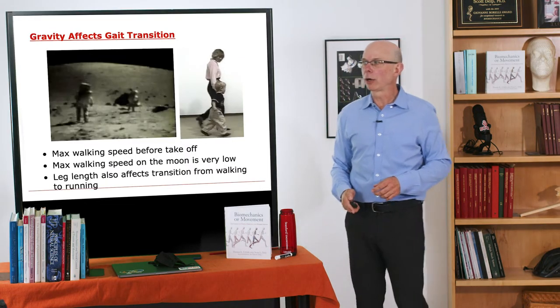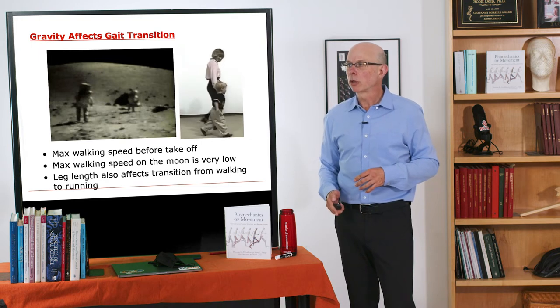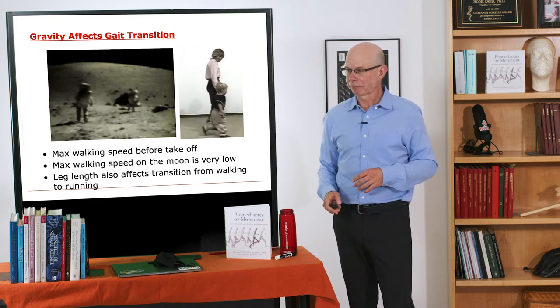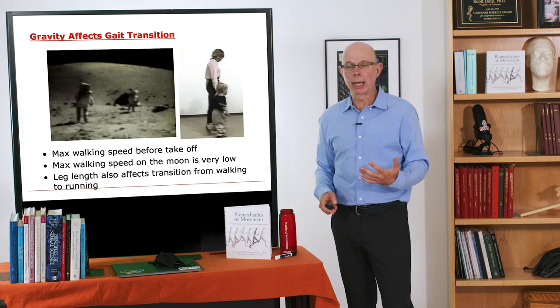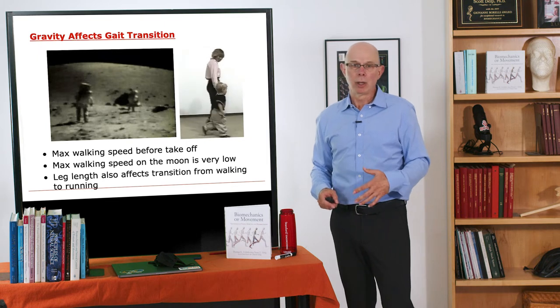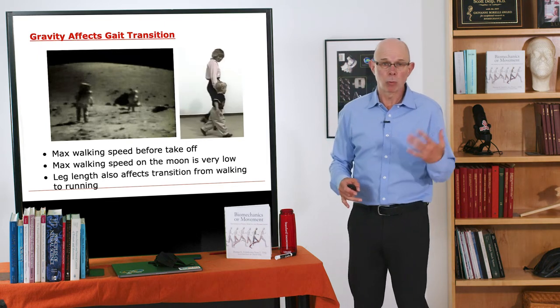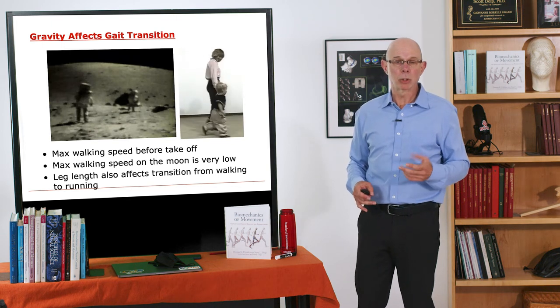And you can see this beautifully here in this video of a mom walking next to her little boy. So those two are walking, and the mom is walking, but the boy with his short legs at that same speed has to run. And that's because he reaches that critical speed of walk-to-run transition at a lower speed than his mom with longer legs does.